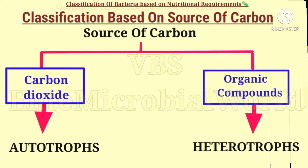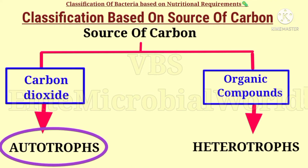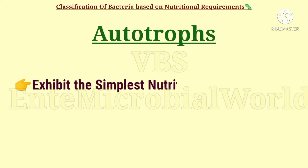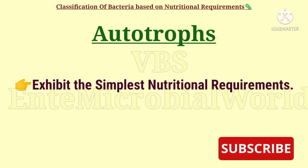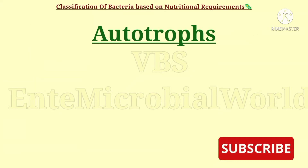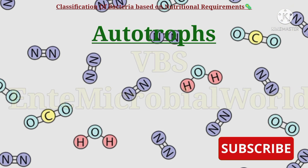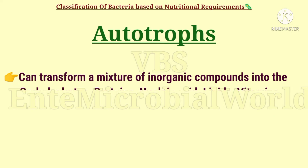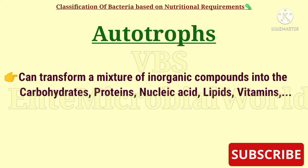Next we are going to see about autotrophs. Autotrophic bacteria exhibit the simplest nutritional requirements. Autotrophs are able to utilize atmospheric carbon dioxide and nitrogen. Autotrophs can transform a mixture of inorganic compounds into carbohydrates, proteins, nucleic acids, lipids, vitamins, etc.